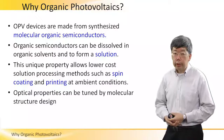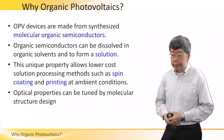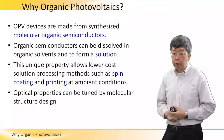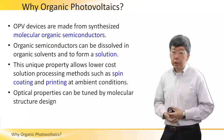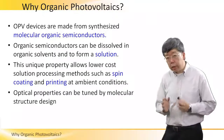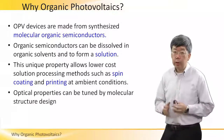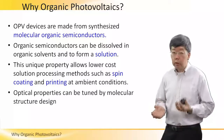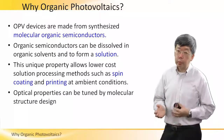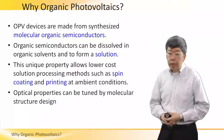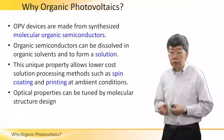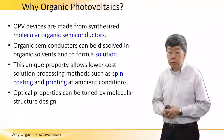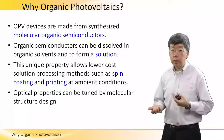Firstly, OPV devices are made from synthesized molecular organic semiconductors. The main difference between organic semiconductors and amorphous silicon or polysilicon is that the material consists of individual molecules instead of a crystal.